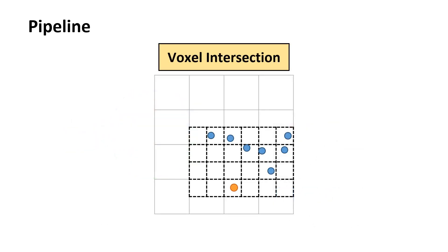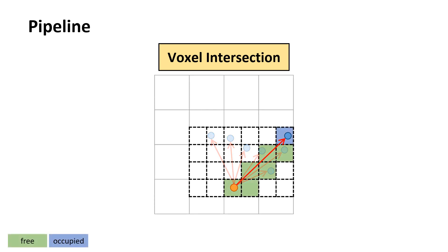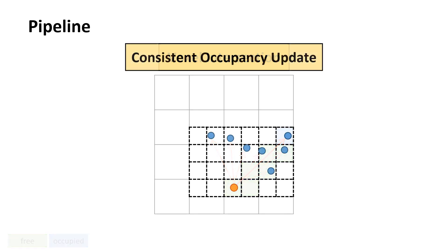To determine voxel state, we shoot rays on the BVH in parallel, finding intersected voxels to label as free or occupied. Incorrect obstacle spaces can build inaccurate maps when multiple rays cross the same voxel with different classifications.